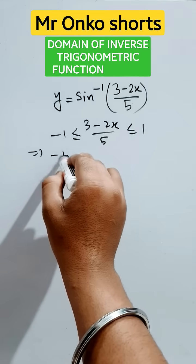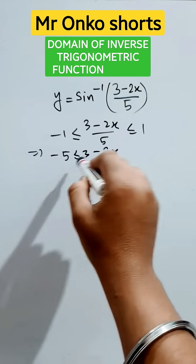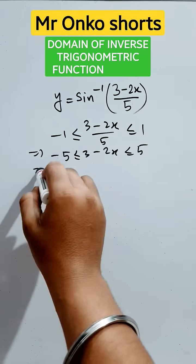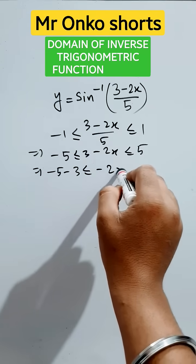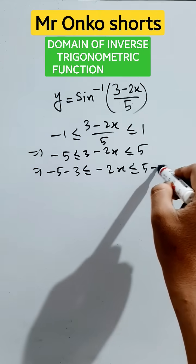Let's simplify this: minus five less than three minus two x less than five. So minus five minus three less than or equals to minus two x less than or equals to five minus three.